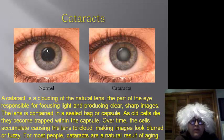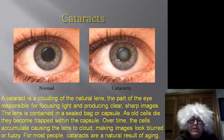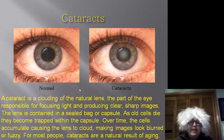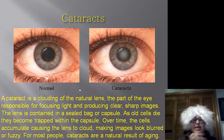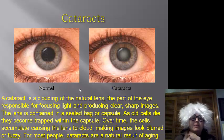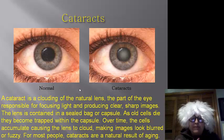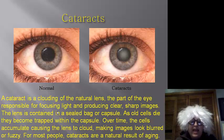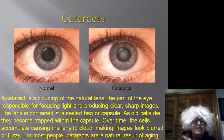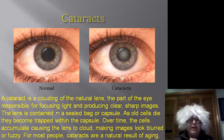Cataracts. We have a normal eye and we see cataracts on this one — a cloudiness or haziness. It is the cloudiness of the natural lens of the eye responsible for focusing light and making a clear picture. This is due to old cells dying and becoming trapped within the capsule. Over time, they accumulate along the lens making it cloudy, which can cause blurry or fuzzy vision. It is typically natural and age-related, and it can cause blindness.